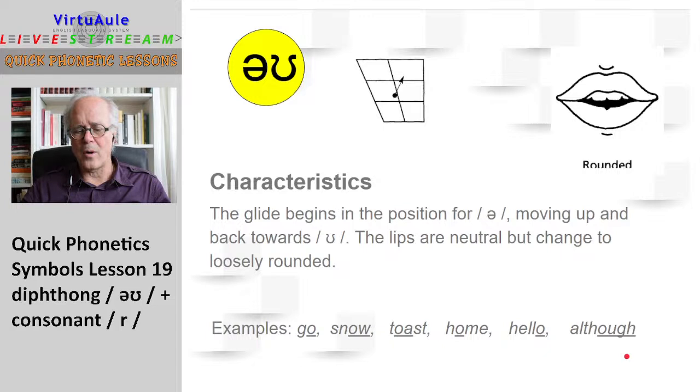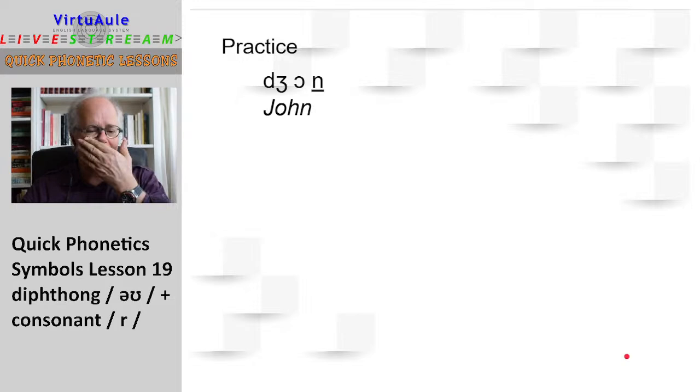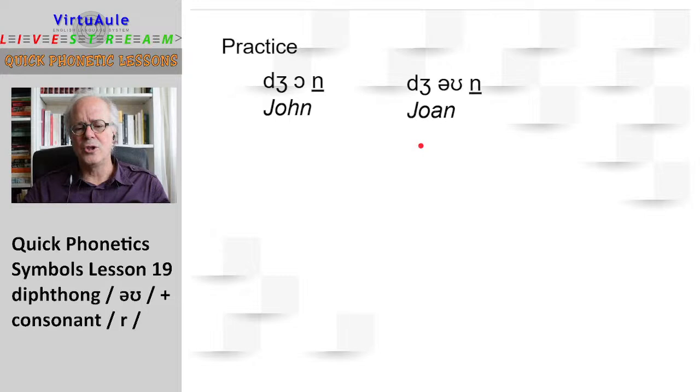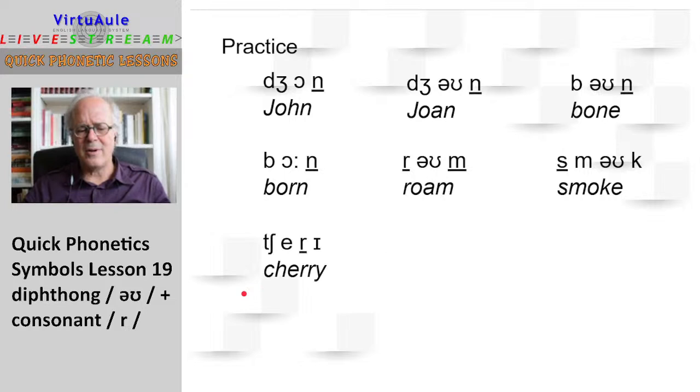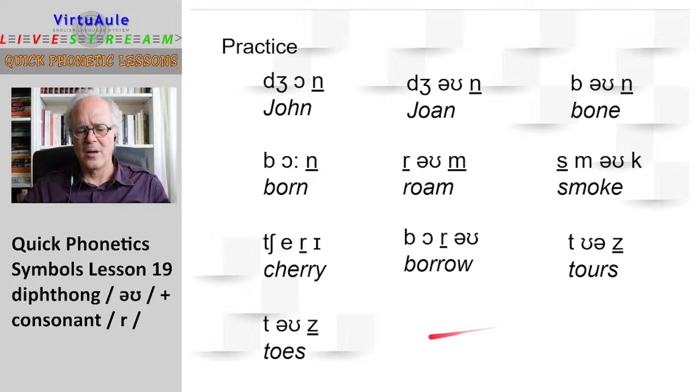So, let's do some practice with some words now. First one: Joan, bone, born, Rome, smoke, cherry, borrow, tours, toes, those, roses.